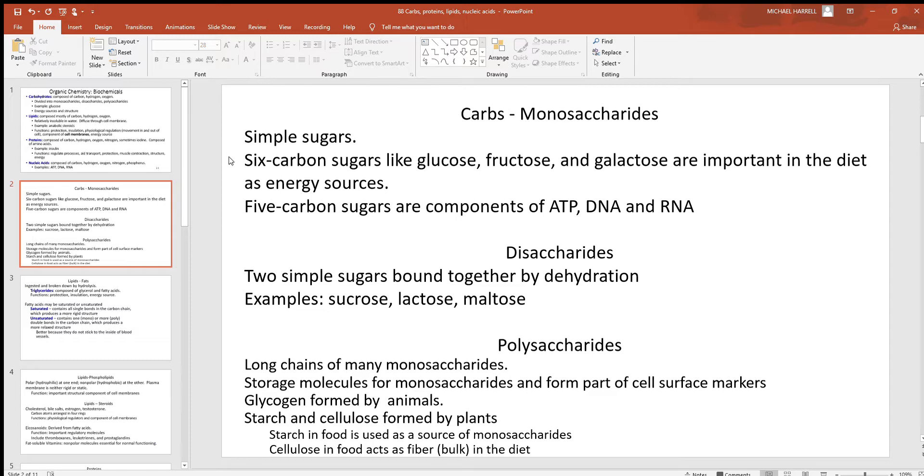There are six carbon sugars like glucose, probably heard of that one before, fructose found in fruits, and galactose. Those are good dietary sources of simple sugars. There are five carbon sugars making very important parts and components of ATP, DNA, and RNA. It's big in their structure.